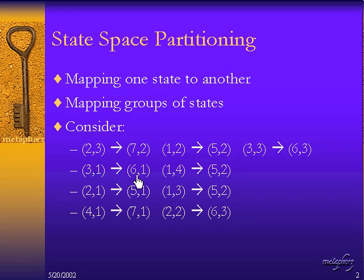3 comma 1 maps to 6 comma 1, 2 comma 1 maps to 5 comma 1, and 4 comma 1 maps to 7 comma 1. So you can see here is that there's a simple rule that if we add 3 to the leftmost integer right here, then we get the corresponding target, and we have one rule instead of having three individual specific state transitions.